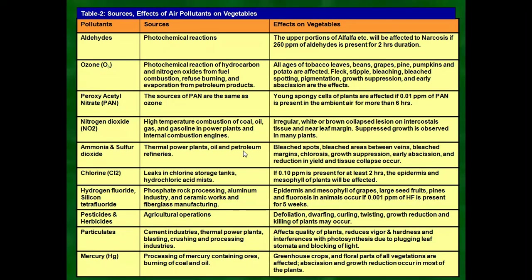Ozone is produced by photochemical reactions of hydrocarbons and nitrogen oxides from fuel combustion, refuse burning, and evaporation from petroleum products. It badly affects tobacco leaves, beans, grapes, pine, pumpkins, and potatoes. If such affected produce enters the market and we consume it, the ecosystem is disturbed and our health is also badly impacted. Effects include spotting, pigmentation, growth suppression, and separation of plant tissues.